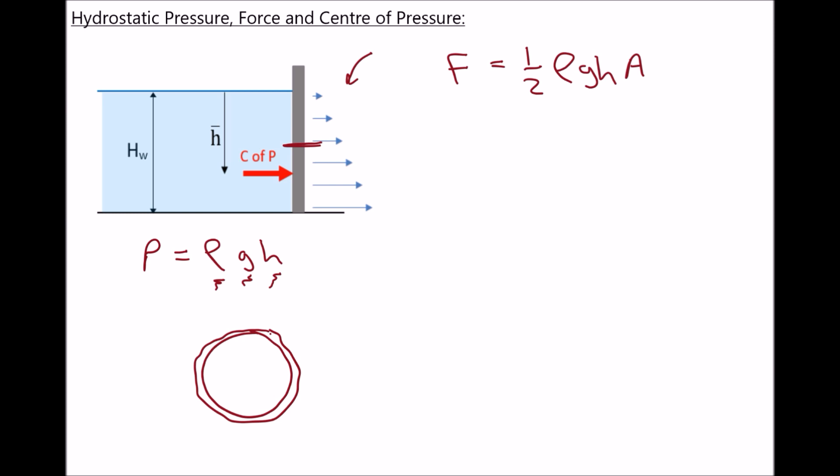This is where things become a little bit more complicated, because the hydrostatic force doesn't actually act at our horizontal centre line. Another name for that horizontal centre line is the centroid. In actual fact our force acts at the centre of pressure. From earlier tutorials, in this scenario the distance from the bottom of the retaining wall to the centre of pressure is actually a third of the height of the water. Therefore h bar is two thirds of the height of the water, and we'll see how that's determined later.